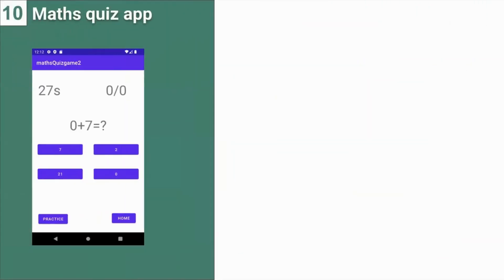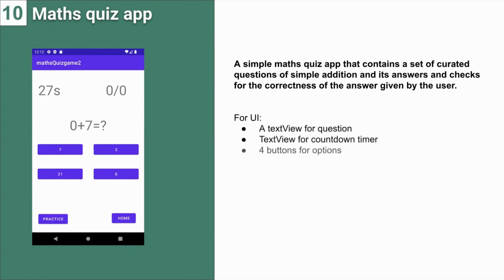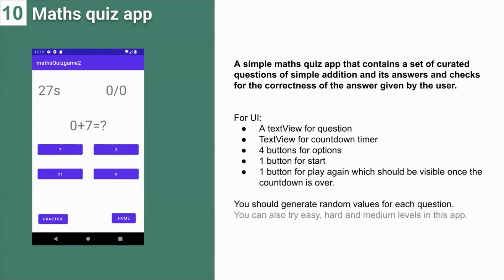The last one is a simple math quiz app that contains a set of curated questions for simple addition, checks the correctness of answers given by the user. For the UI part: a text view for the question, a text view for a countdown timer, four buttons for options, one button to start, and one button to play again — which should be visible once the countdown is over. You should generate a random value for each question. You can also try easy, medium, and hard difficulty levels in this app.